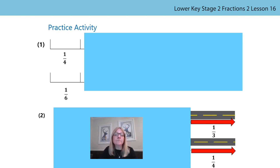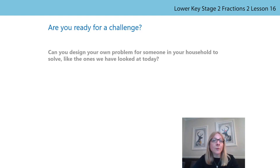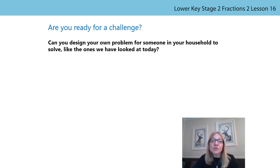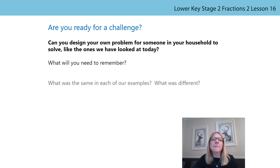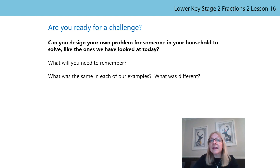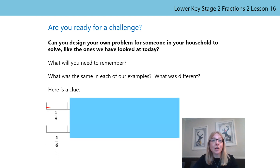Now it's your turn. There are two questions in your practice activity. For number one, can you draw what the lines would look like once the box is removed? For number two, which of the journeys is the longest, and how do you know? You might also want to have a go at this challenge question: could you design a problem for someone else in your house, like the ones we've looked at today? Think about what has been the same in each of our examples and what has been different. Here is a bit of a clue for you. Good luck!